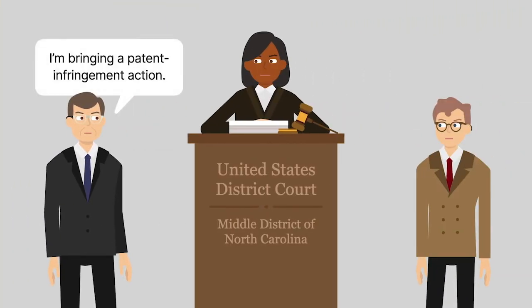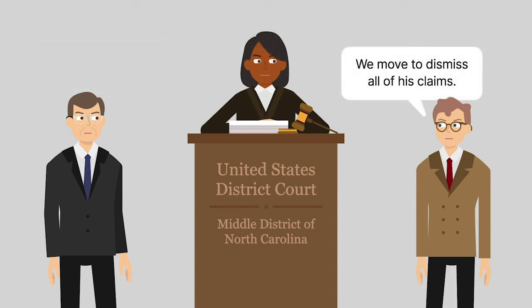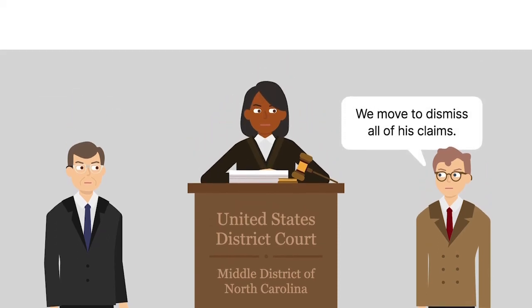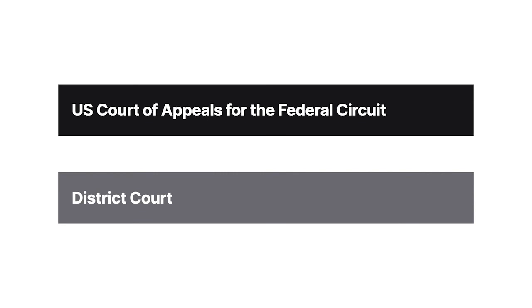Maddy brought a patent infringement action against Duke in the United States District Court for the Middle District of North Carolina. In response, Duke moved to dismiss all of Maddy's claims, which the court granted in part. Following discovery, Duke moved for summary judgment on the remaining claims, which the district court granted. In granting the motion, the court held that the experimental use exception applied to Duke's use of the patented laser technology. Maddy appealed to the United States Court of Appeals for the Federal Circuit.